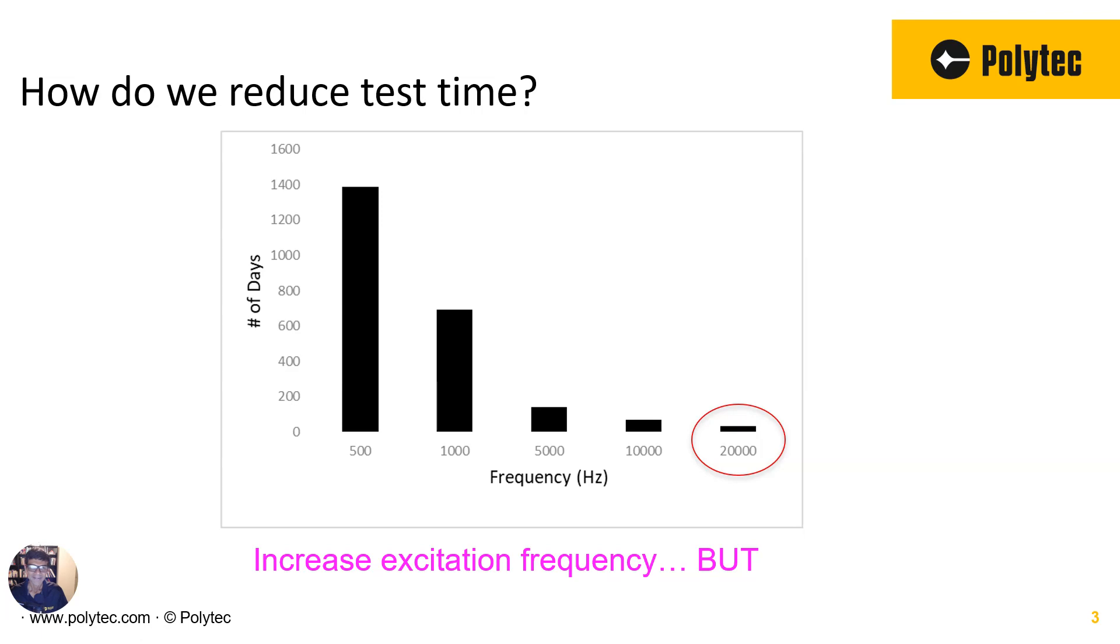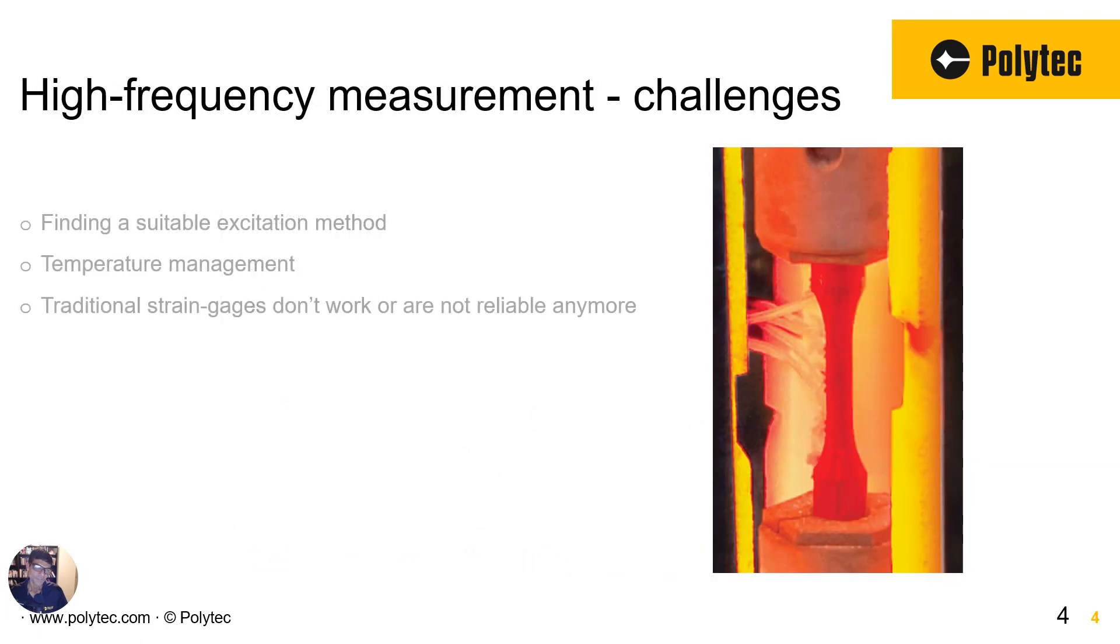However, a higher frequency comes with its own set of challenges. First of all, testing at 500 or 1,000 hertz is very different than testing at 20,000 hertz. It's not that straightforward to find a well-controlled, well-defined excitation methods specifically designed for this kind of fatigue test. Now, at higher frequencies, the temperatures are also much higher. So now you get into the temperature management side of things. How are you going to make sure that you're testing under similar conditions throughout your test? So that's also another challenge at high-frequency testing.